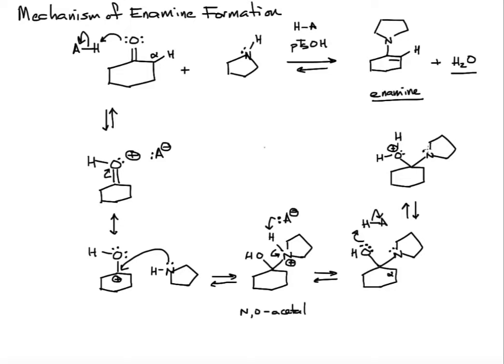Let's show an elimination with this lone pair on nitrogen forming a CN pi bond. An elimination forms a pi bond. This is our best leaving group, so that's going to leave as water.